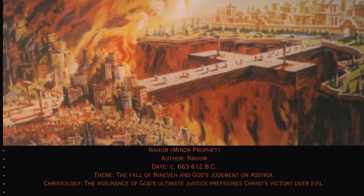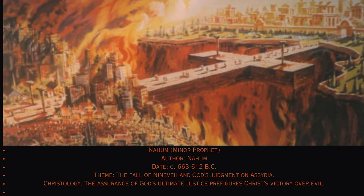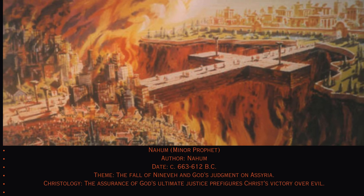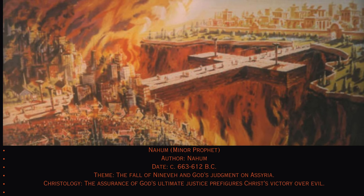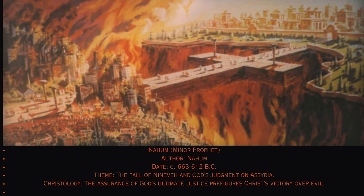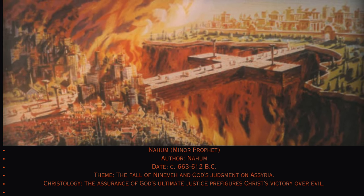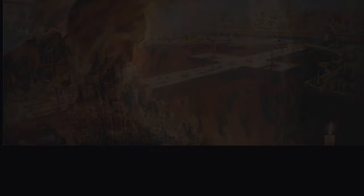34. Nahum. Minor prophet. Author: Nahum, circa 663–612 B.C. Theme: The fall of Nineveh and God's judgment on Assyria. Christology: The assurance of God's ultimate justice prefigures Christ's victory over evil.